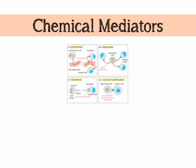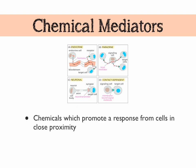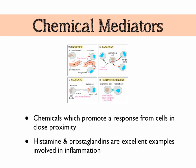Chemical mediators basically act on cells close by — they're produced in one cell and cause a response in any nearby cells. As we can see in the diagram on this slide, this is known as paracrine signalling, as opposed to endocrine signalling, where a hormone released from one cell travels in the blood to a very distant receptor cell. Histamine and prostaglandins are excellent examples involved in the body's inflammatory responses.